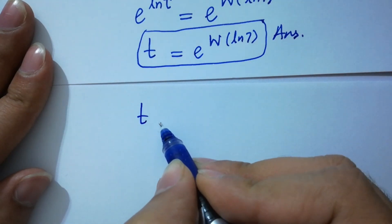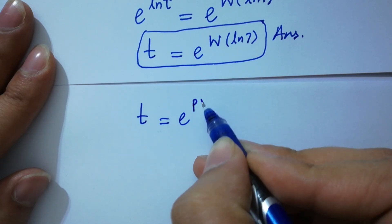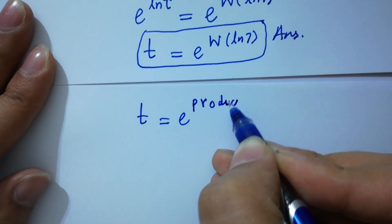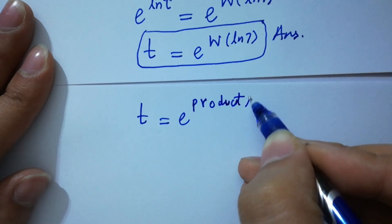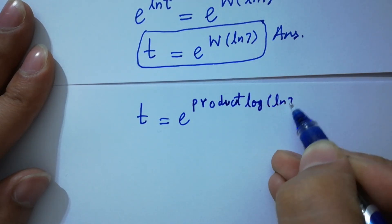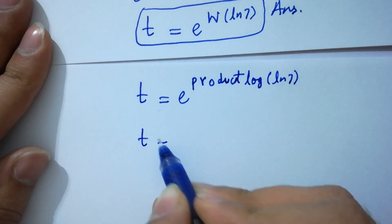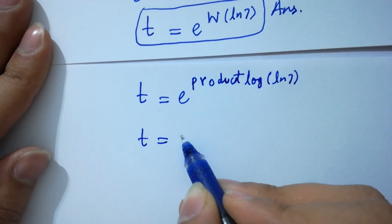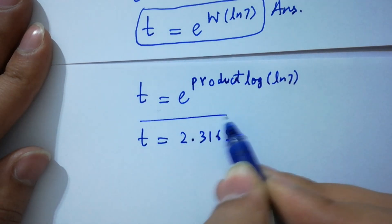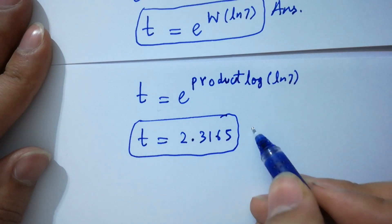Therefore t = e^(W(ln 7)) = 2.3165, which is the answer.